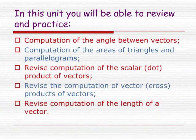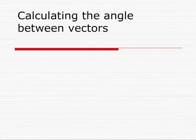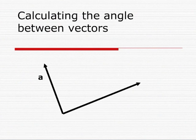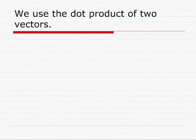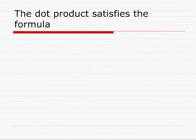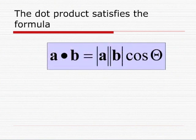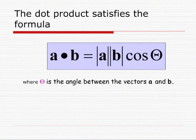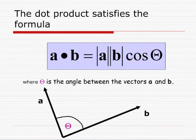And the computation of the length of a vector. To calculate the angle between two vectors A and B with included angle theta, we use the dot product of the vectors. The dot product of two vectors is given by A·B = AxBx + AyBy + AzBz. But the dot product also satisfies the formula A·B = |A| × |B| × cos(theta), where theta is the angle between the vectors A and B as shown in the picture below.